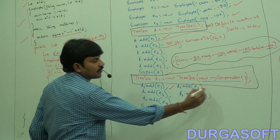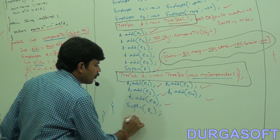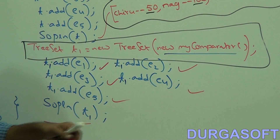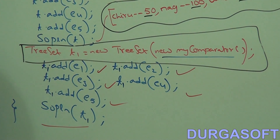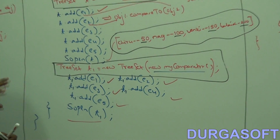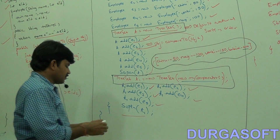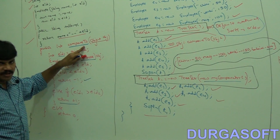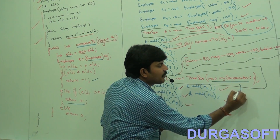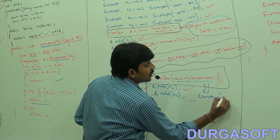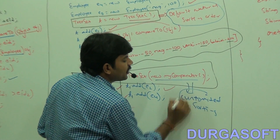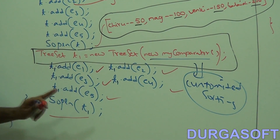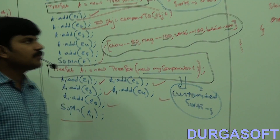If you are not satisfied with the default natural sorting order and want sorting based on name, then define a customized sorting. T1 is equal to new TreeSet of new MyComparator. Add five objects: T1.add(E1), T1.add(E2), E3, E4, E5. When adding objects with a Comparator provided, internally the compare method will be called for customized sorting.